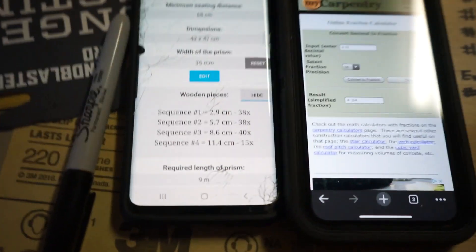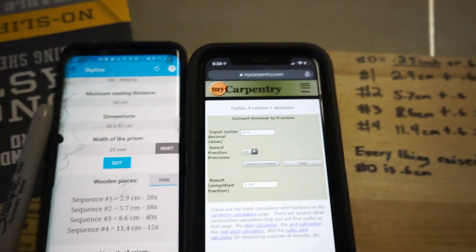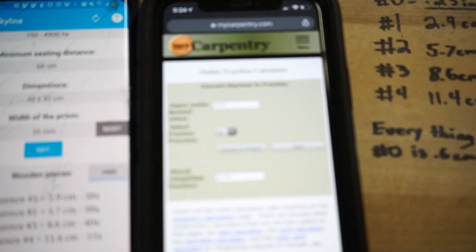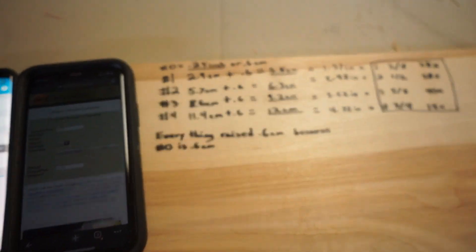Alright, so now you got all your measurements. It does give it to you in centimeters so I changed mine from centimeters to inches and from inches I changed it to fractions on a tape measure.